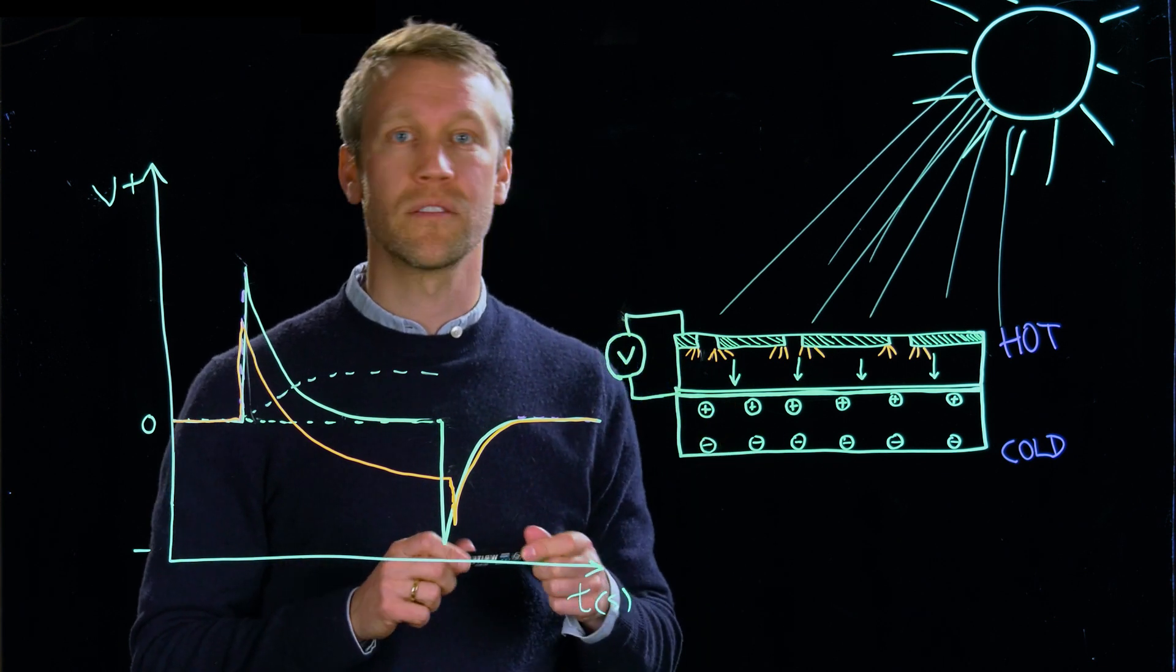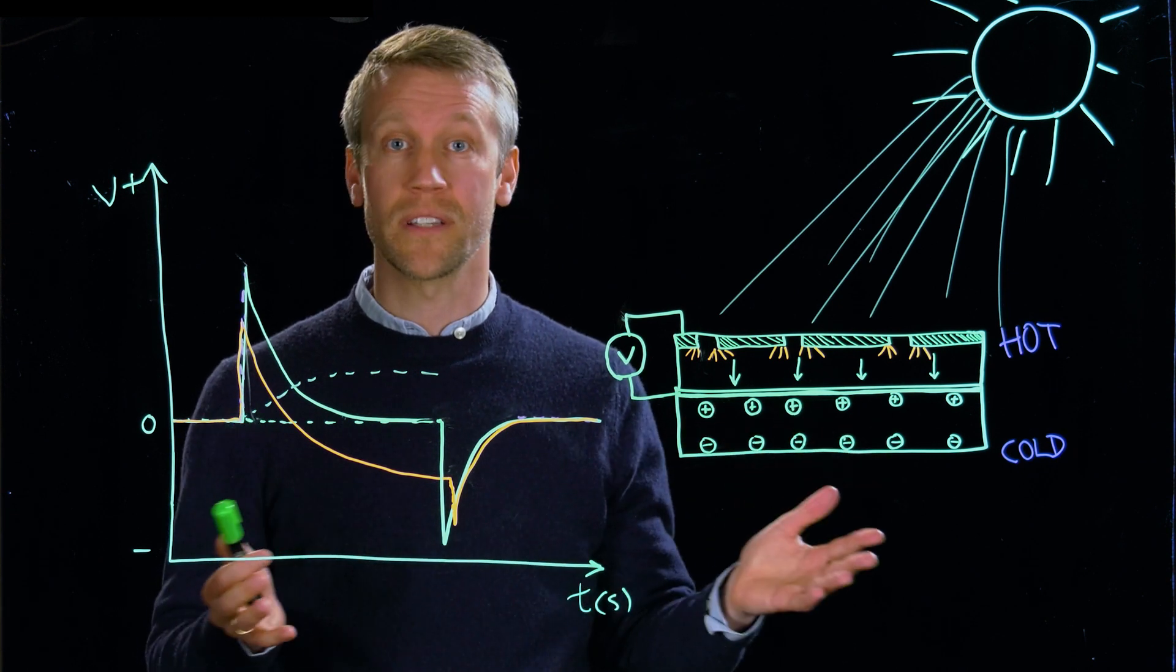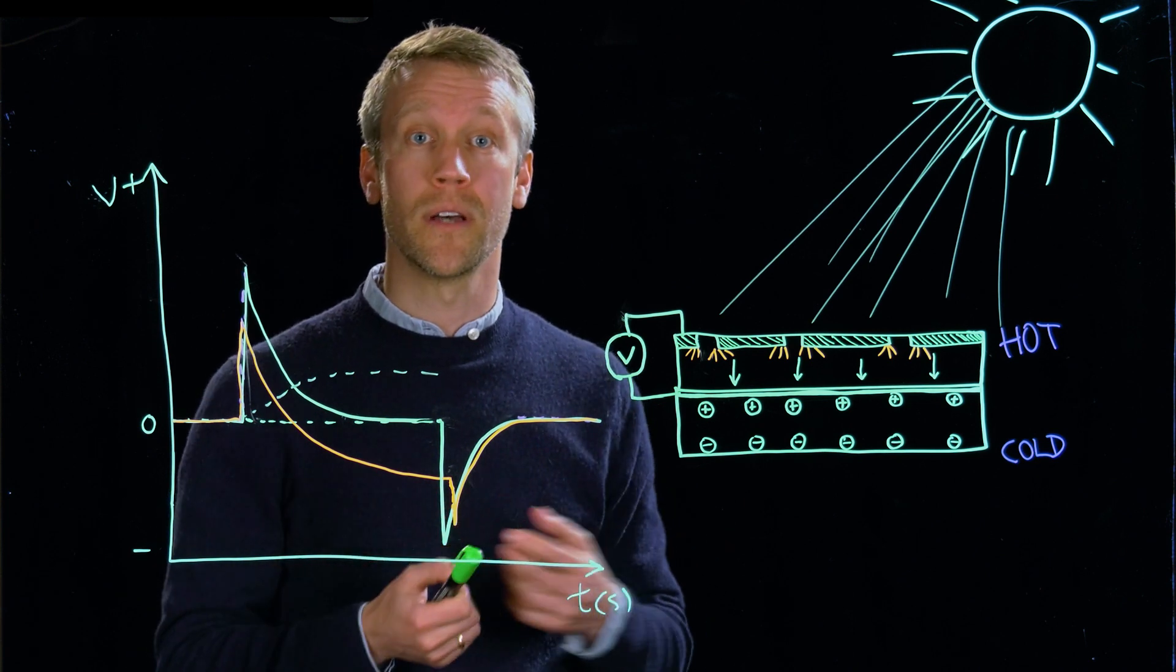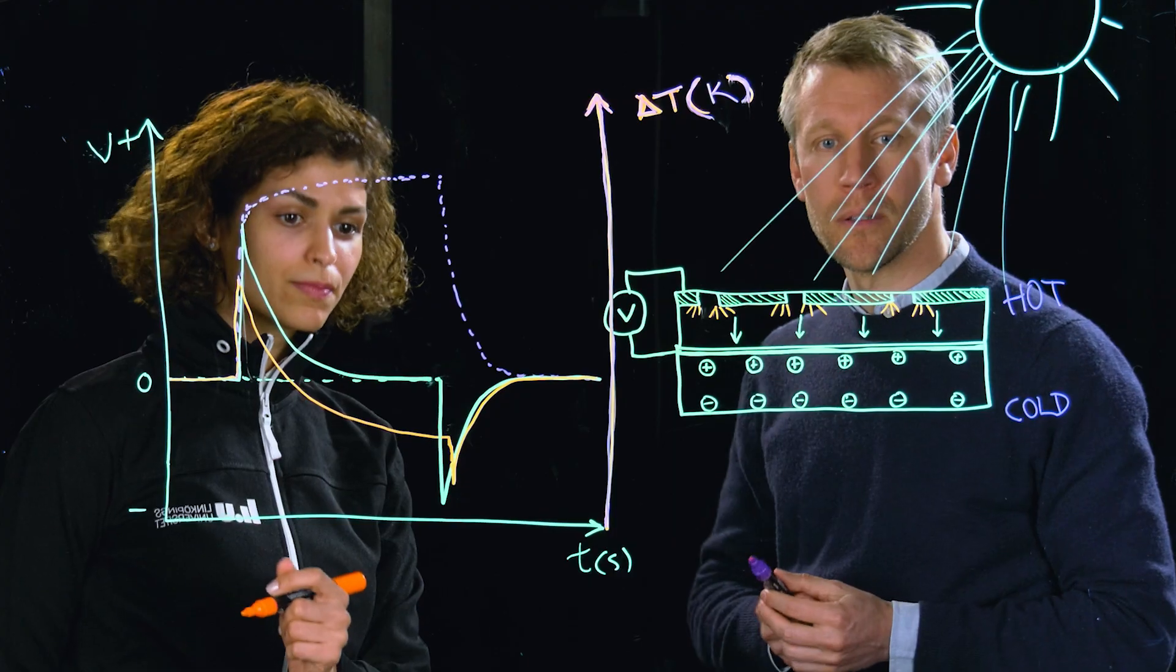For example, electronic skin needs to be able to detect both heat from the body and also illumination from the Sun. That's based on this combined device.